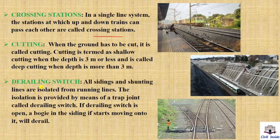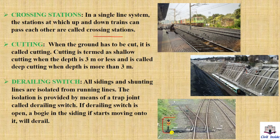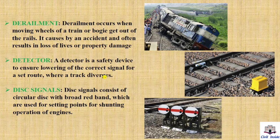Next, derailing switch. All siding and shunting lines are isolated from running lines. The isolation is provided by means of a trap joint called a derailing switch. If the derailing switch is open and a bogie in the siding starts moving onto the running line, it will derail. Next, derailment. Derailment occurs when moving wheels of a train or bogie get out of the rails — it is an accident that often results in loss of lives or property damage.